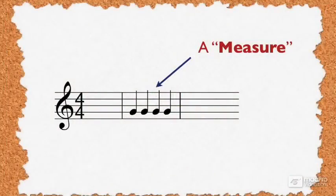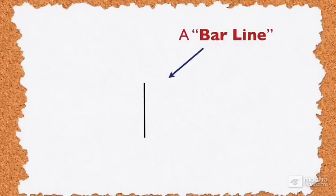In music notation, we put these together inside of a measure. A measure is notated with a line, sometimes also called a bar line.